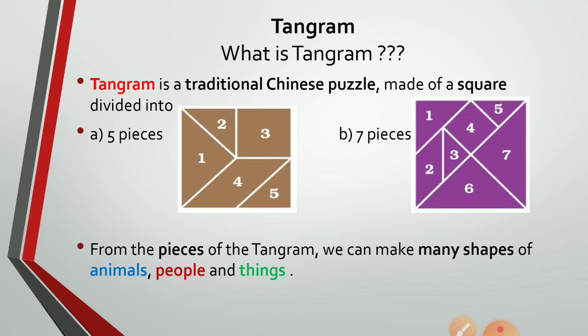Tangram is of two types: the first is the five-piece tangram and the second is the seven-piece tangram. The five-piece tangram has five pieces of geometrical shapes, and the seven-piece tangram has seven pieces of geometrical shapes. From the pieces of tangram, we can make many shapes of animals, people, and things.